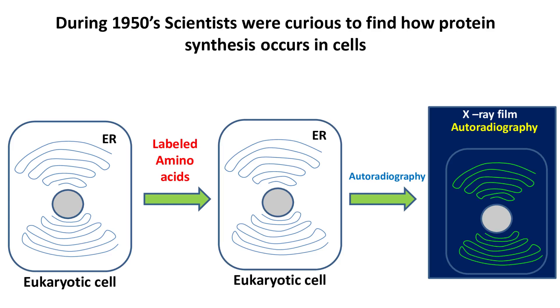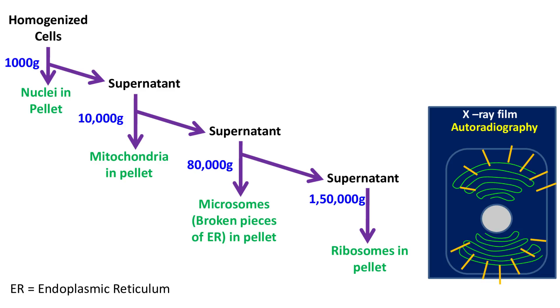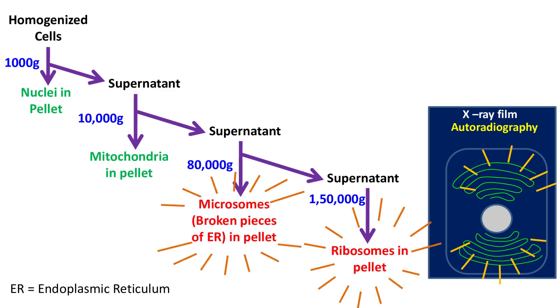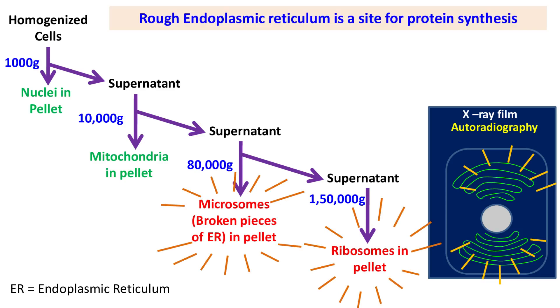When they treated cells with labeled amino acids, they found the activity was detected on the endoplasmic reticulum, and ultracentrifugation showed the activity on the ribosomes. This means the rough endoplasmic reticulum is a site for protein synthesis in cells.